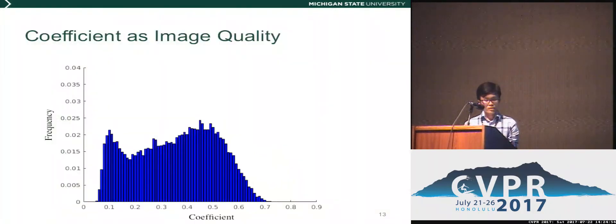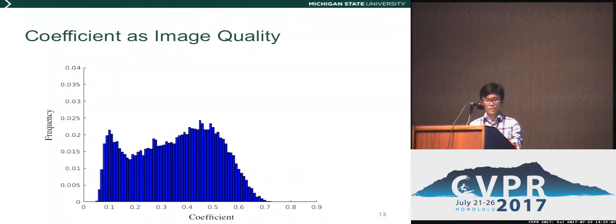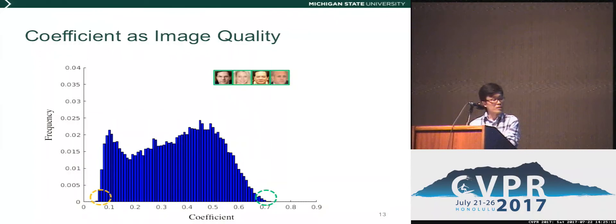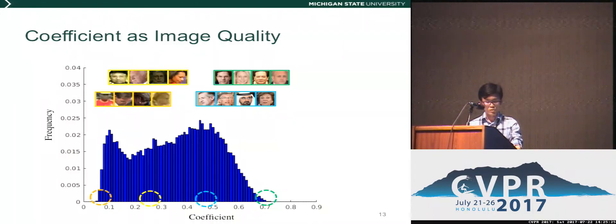We only have indirect supervision, in the hope that the encoder will assign higher omega to frontal, high-quality faces, and lower omega for side-view or blurry faces. Even without any direct supervision on omega, the GAN is still able to learn to assign more weight to images with better quality. To show the effectiveness of omega as an image quality estimator, we plot the distribution of all omega values in the IJBA dataset. We show face images in four different pose groups. It is clear that images with high coefficients are mostly frontal with high resolution, while on the opposite side, images are in extreme poses and low resolution.